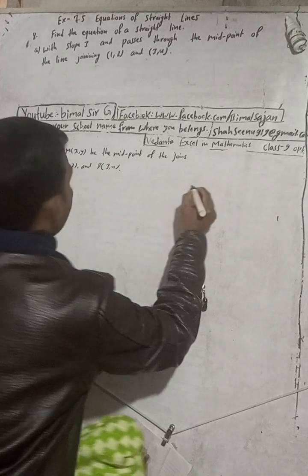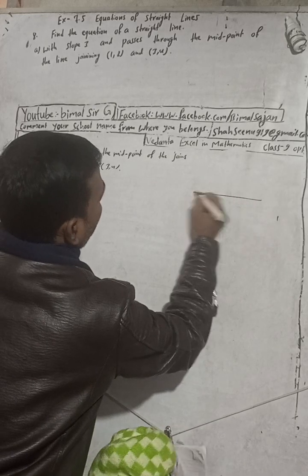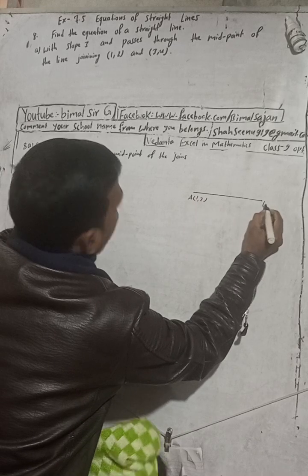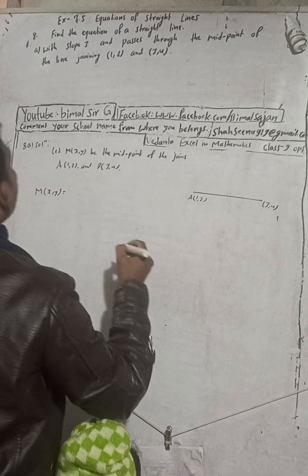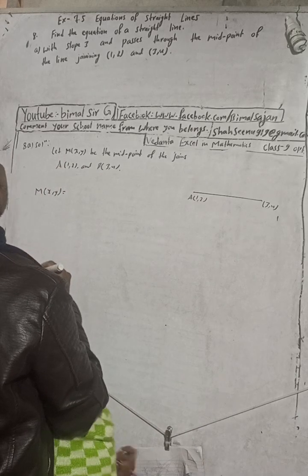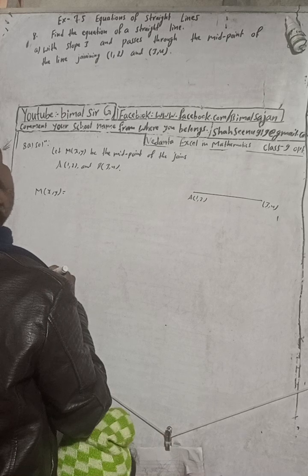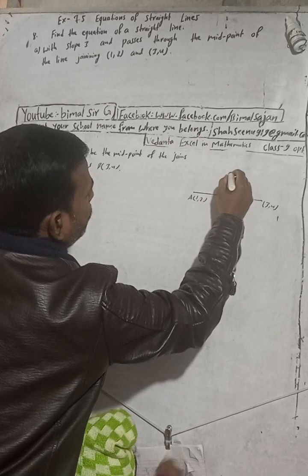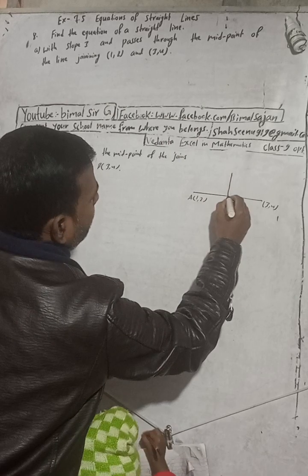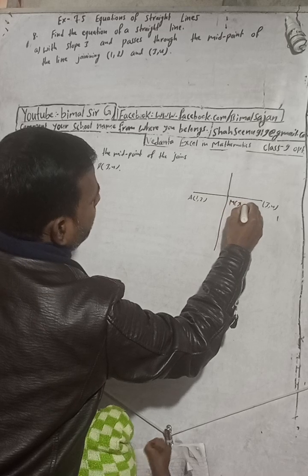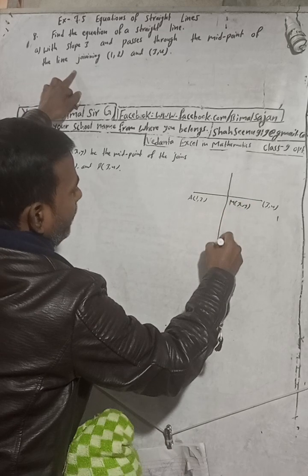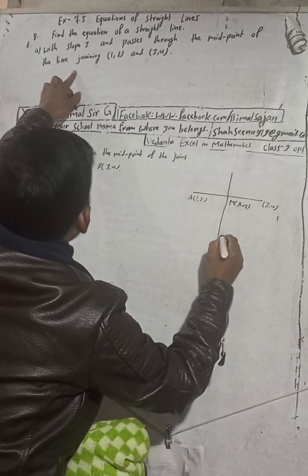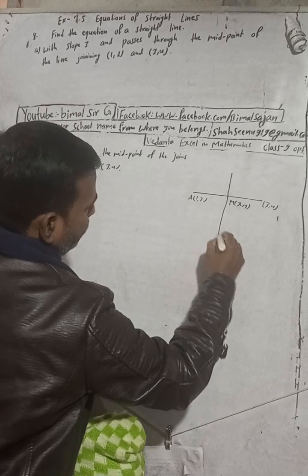See the figure here — this is our point A(1,2) and this is our point B(3,4). We have to find the equation of the line with slope 3 that passes through the midpoint of this segment. So this midpoint is our point (x, y), and the slope m is equal to 3.